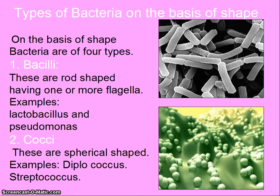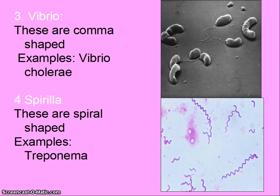On the basis of shape, bacteria are of four types. The first is bacilli — these are rod-shaped, having one or more flagella; examples are Lactobacillus and Pseudomonas. The second type is cocci — these are spherical-shaped; examples are Diplococcus and Streptococcus. The third type is vibrio — these are comma-shaped; the example is Vibrio cholerae. The fourth type is spirilla — they are spiral-shaped; the example is Treponema.